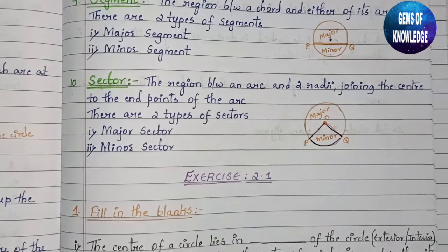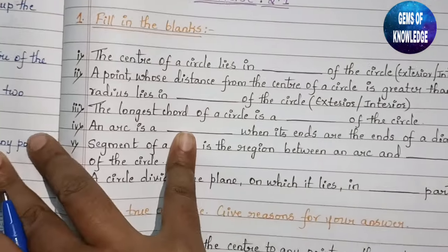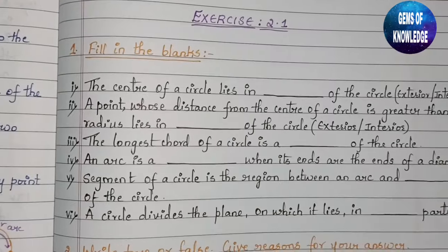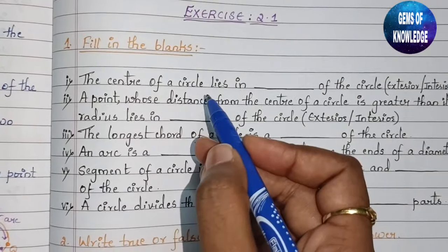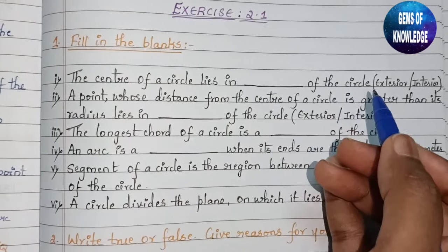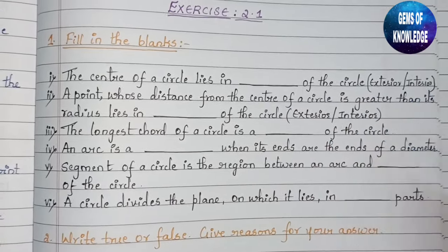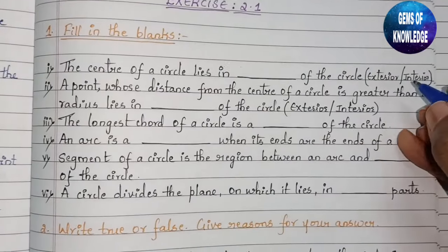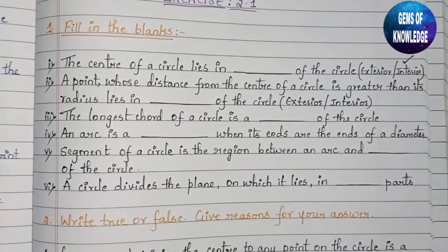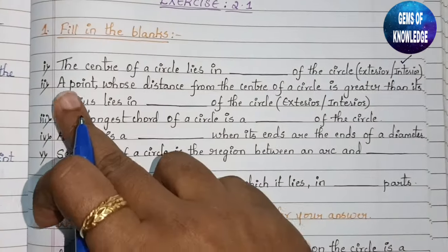There are two sectors: major sector and minor sector. Now we'll solve Exercise 2.1. Question one: the center of the circle lies in dash of the circle. Where do you find the center — exterior or interior? Obviously, inside the circle, so the answer is the interior of the circle.